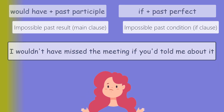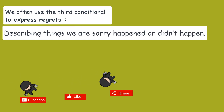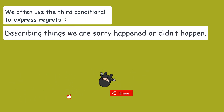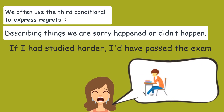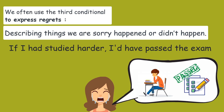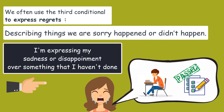We often use the third conditional to express regrets, describing things we are sorry happened or didn't happen. For example, if I had studied harder, I'd have passed the exam. Here I'm expressing my sadness or disappointment over something that I haven't done.